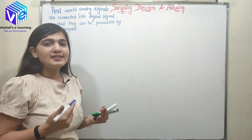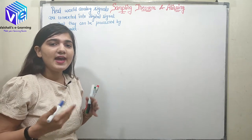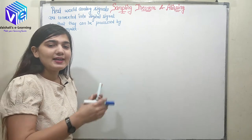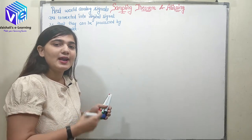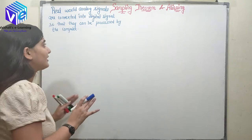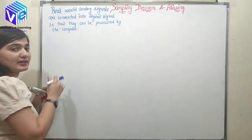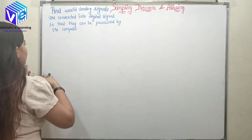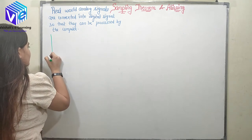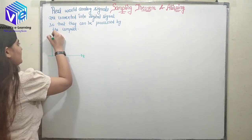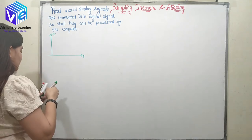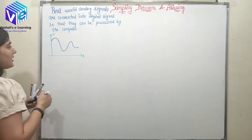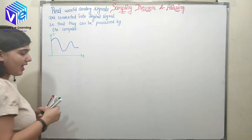Since a computer can understand zeros and ones only, I need to convert all of the analog signals which I need to send to the receiver, so that they can be processed by the computer and detected by the receiver's computer as well. Now I need to know what is an analog signal and what is a discrete signal. If I plot an analog signal, this is the time axis and this is the amplitude axis, and I have continuous variation over both time and amplitude axes. This is my analog signal.